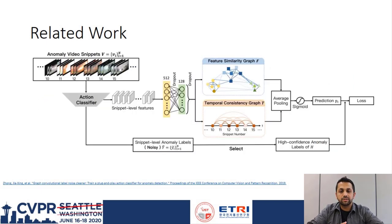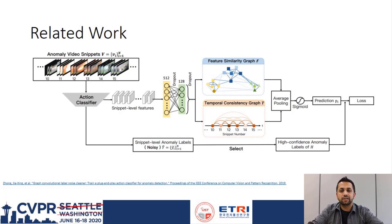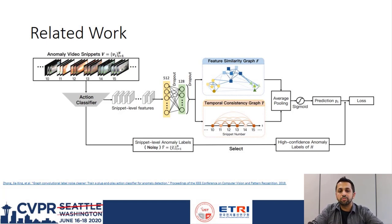The authors of another paper approach the weakly supervised learning in terms of label noise removal from anomalous videos, where the noise refers to normal frames present within anomalous videos. This is an interesting approach as, by definition, normal videos do not contain anomalies. The approach utilizes action classifiers to train a graph convolution network, which then helps in cleaning noise from the labels of anomalous videos. Our work is similar in essence, as we also attempt to mitigate label noise present in anomalous videos.